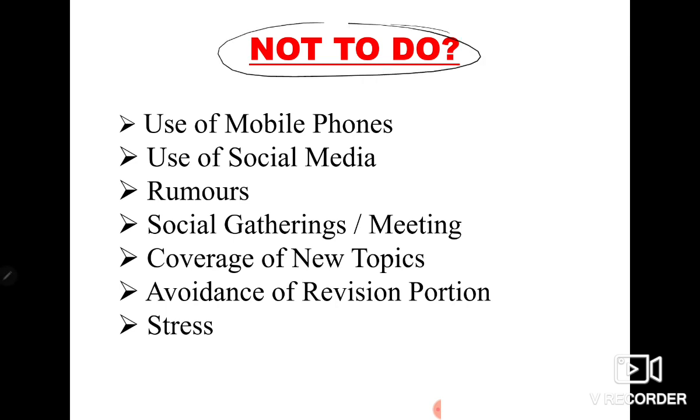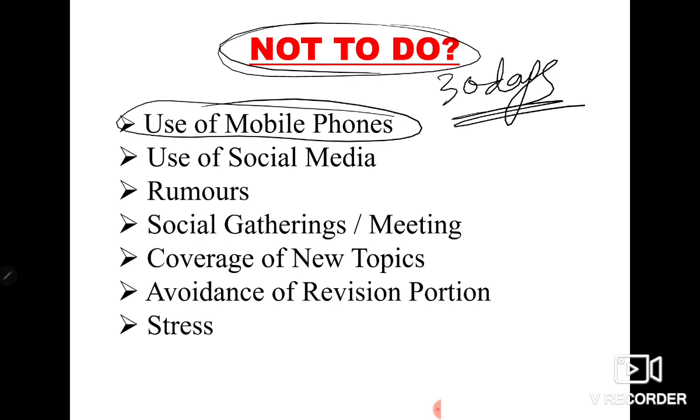Next is most important - what NOT to do. Suppose we have 30 days time, what things should we absolutely avoid? Number one is use of mobile phones. Although you will watch this video through mobile phone also, but mobile phone use is prohibited mainly because we spend time on Facebook or social media sites which are very time consuming and not relevant to our exam. Avoid such things. Next comes rumors, because before exams there are many rumors - paper will be cancelled, paper will not happen, or paper will be difficult or easy.